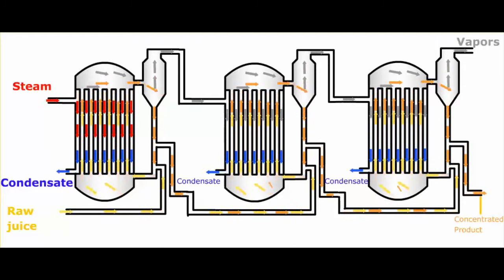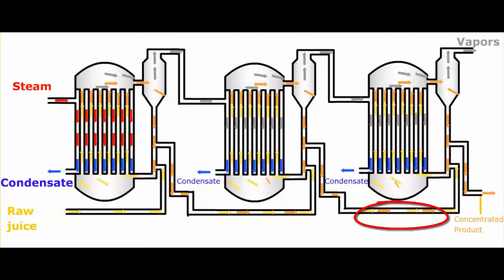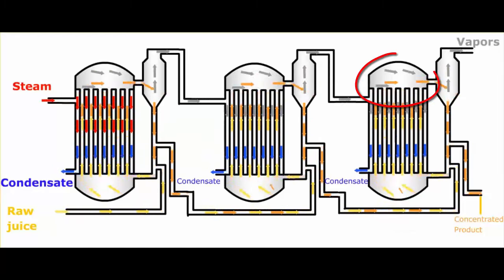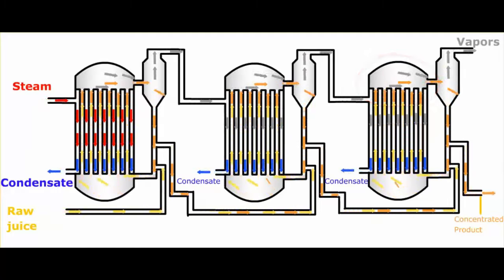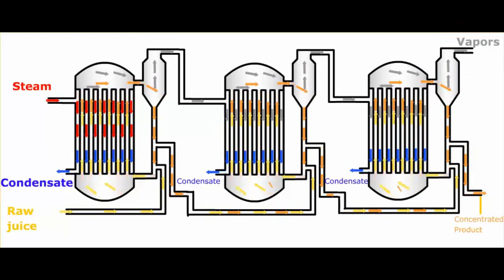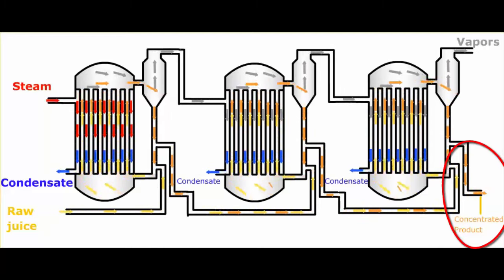The concentrated liquid from the second effect is then fed into the third effect at the bottom of the heating section, and again more vapors will come out at the top, which are then discharged into the atmosphere, and the concentrated product stream leaves on the right-hand side from the third effect.